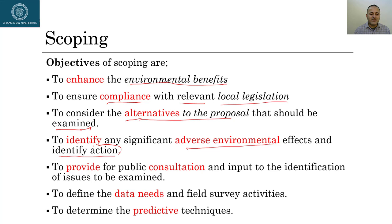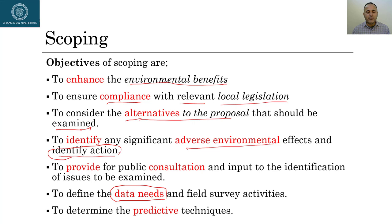Scoping identifies significant adverse environmental effects and the corrective actions needed — this is the mitigation part. It also provides an opportunity for public consultation and input, defines data needs and field survey activities, and determines the predictive techniques the study will use for predictive analytics.